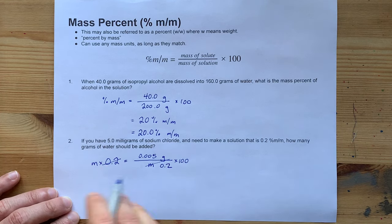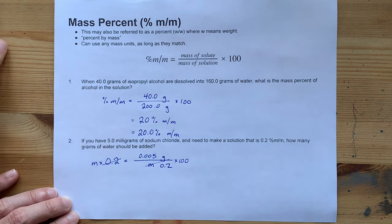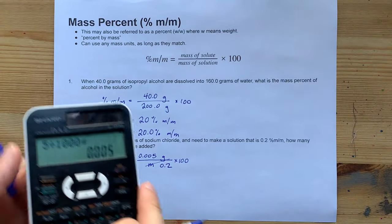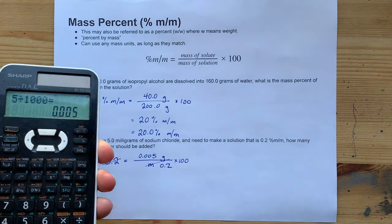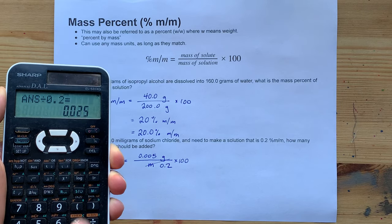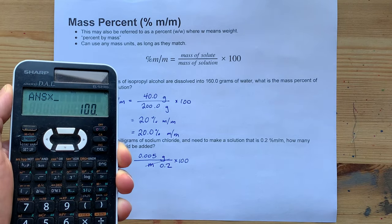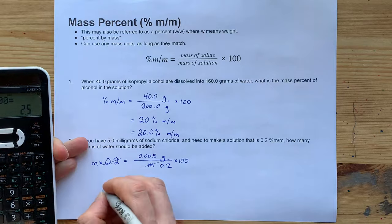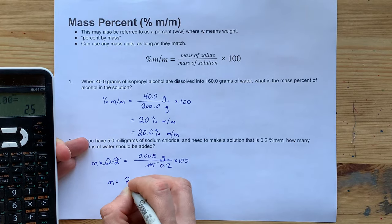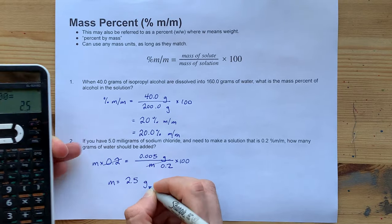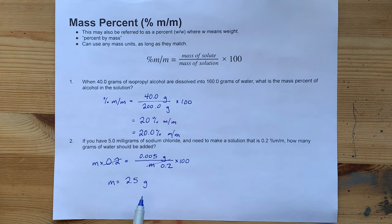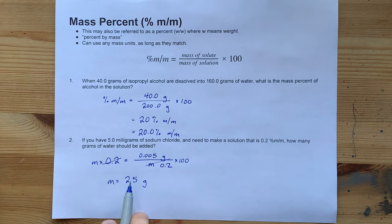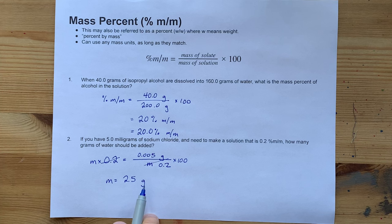There's lots of ways to mathematically manipulate this. But to get m here, I'm going to take this tiny number, divide it by 0.2, and times it by 100. That gives me an m of 2.5 grams. So I need to make the solution weigh 2.5 grams total,